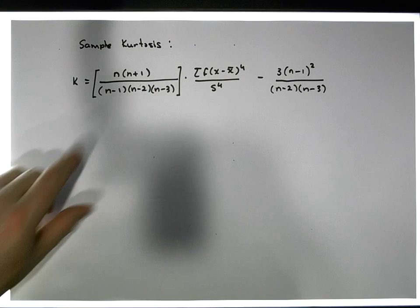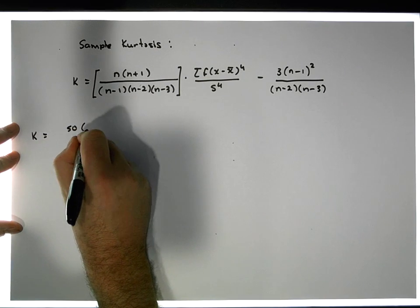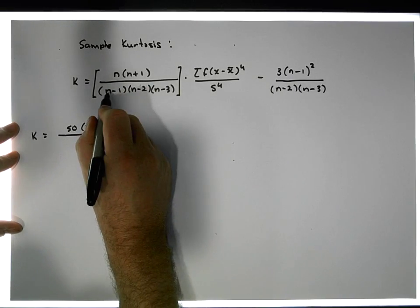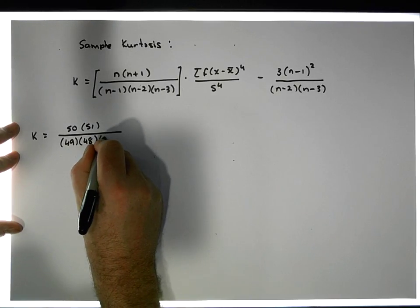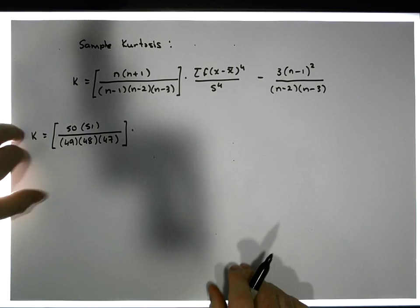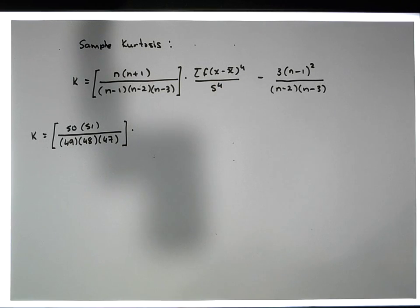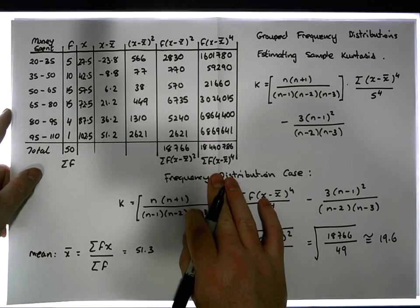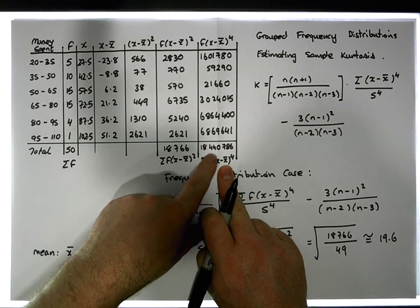Our sample size is equal to 50. So k equals 50 times 51 — that's (n plus one) — divided by 49 times 48 times 47. That factor is multiplied by the sum of the frequencies times (x minus x-bar) to the power of four, which we've already calculated to be 18,440,786.